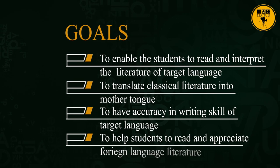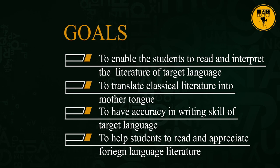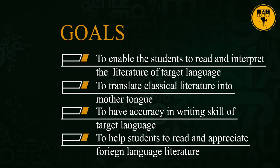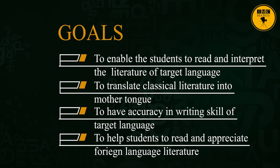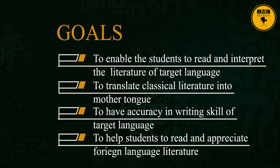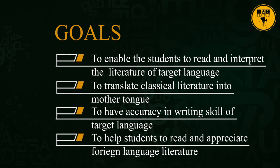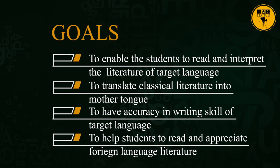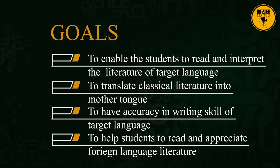The goals of GTM are: first, to enable students to read and interpret the literature of the target language; second, to translate classical literature into the mother tongue; third, to have accuracy in the writing skill of the target language; and fourth, to help students read and appreciate foreign language literature.